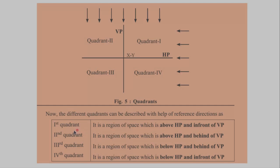Describing them, we can say that quadrant one is the region of space which is above HP and in front of VP. Similarly, quadrant two is above HP and behind VP, quadrant three is below HP and behind VP, while quadrant four is below HP and in front of VP.